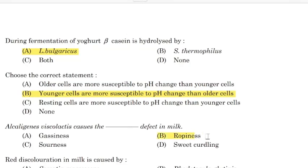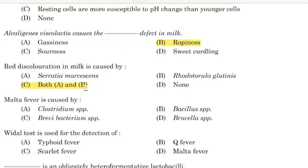Alkylgenes viscoelacticus causes the blank defect in milk — Correct answer: Option B — Ropiness. Malta fever is caused by — Correct answer: Option D — Brucella species.